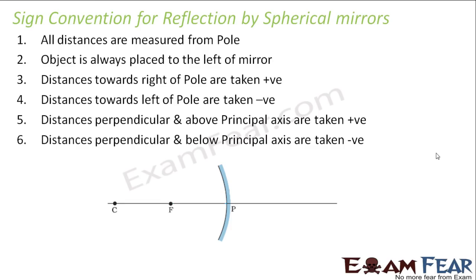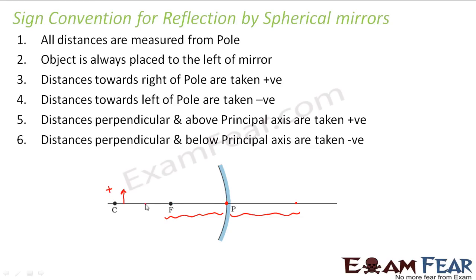Distances perpendicular and below the principal axis are taken as negative. So the pole becomes your origin. Any distance to the right of the pole is positive; any distance to the left is negative; any distance above the principal axis is positive; and any distance below the principal axis is negative. These are the sign conventions which we will follow.